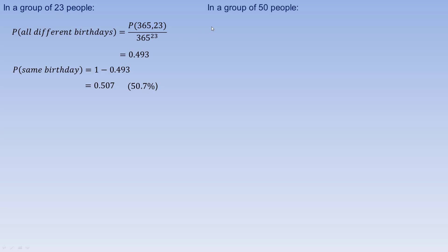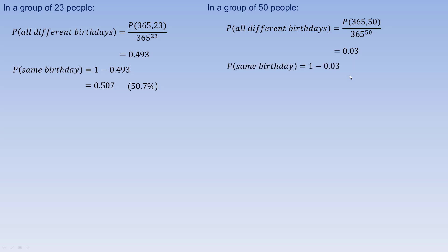If we look at a larger group — say a group of 50 people — the probability they all have different birthdays would be 365 permute 50, over 365 to the 50th. That works out to just 0.03, so the probability that there are some people with the same birthday is 1 minus that. We're actually up to about 97% in just a group of 50 people that there are 2 or more people with the same birthday. It seems counterintuitive, but because there are so many ways that 2, 3, or 4 people could share a birthday across 365 days, the probability is fairly large even with a relatively small group.